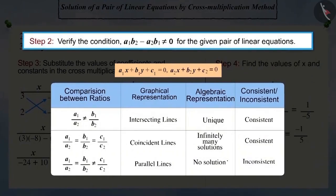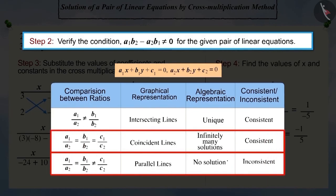Pay attention, if in step 2, the condition of a1 b2 minus a2 b1 is not equal to 0 is not satisfied, then the linear equation will have either infinite solutions or no solution at all. You can test it using this.